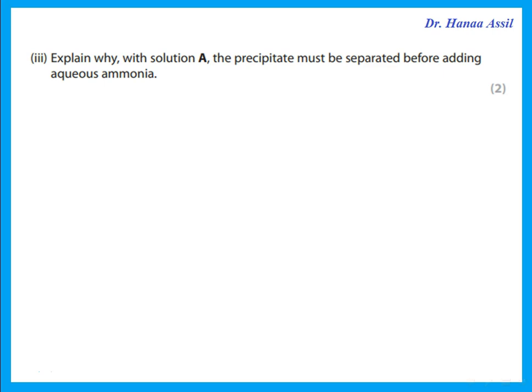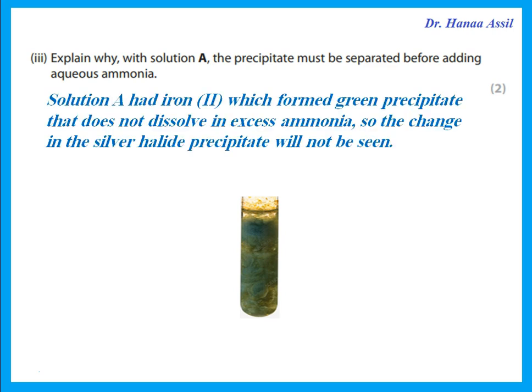Explain why with solution A the precipitate must be separated before adding aqueous ammonia. Solution A contained Fe²⁺, which with sodium hydroxide forms a green precipitate insoluble in excess ammonia. If that precipitate is left in the mixture, the change in the silver halide precipitate — whether it dissolves or not — will not be seen clearly because the green precipitate that is already present has not dissolved.